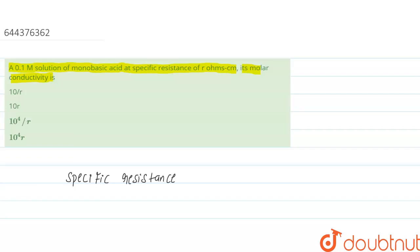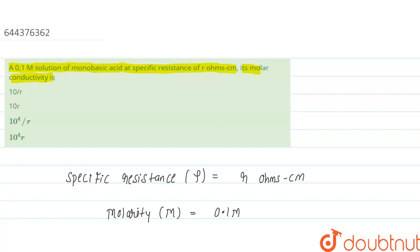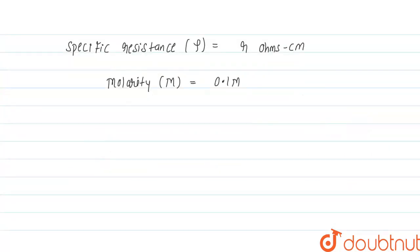The specific resistance is represented by rho, and we are given its value as r ohm centimeter. The molarity of the solution is represented by capital M, which equals 0.1 molarity. We have to find the molar conductivity, represented by lambda M.